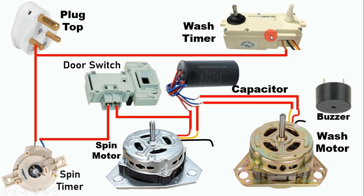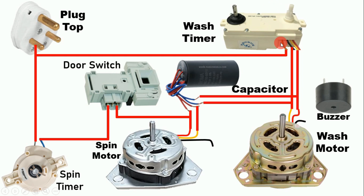When we set the time in the wash timer, the contact changes continuously — it alternates between the black wire and yellow wire for output. Connect the black wire to the running winding and the yellow wire to the starting winding. When the timer runs, power supply goes through the black wire and the motor rotates in anti-clockwise direction for some time, then switches to the yellow wire and the motor rotates in clockwise direction.